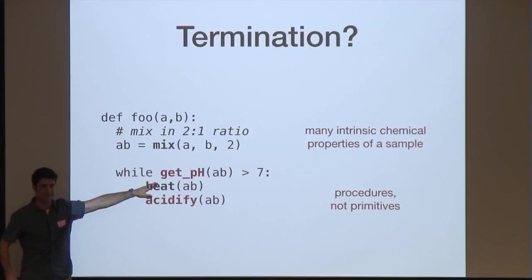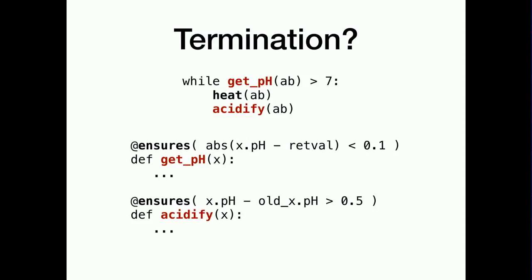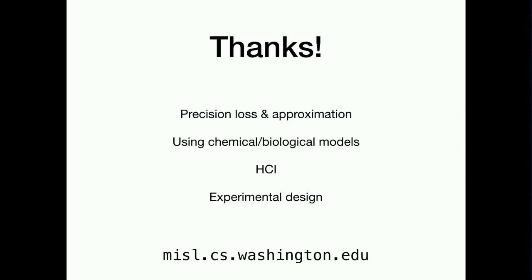But these are user-written procedures and the way that this thing gets the pH isn't calling some primitive. It might be doing some sort of litmus test like you did in chemistry class and might be using a camera or something. So it's not obvious this terminates. And so another big question is how can we get the user to add this sort of domain knowledge into the program so we can perform these types of analyses? So I'll just blaze through that. Yeah. So there's a bunch of other things that I didn't get to talk about that I would love to talk about. So please come ask me afterwards. Yeah. Thanks.